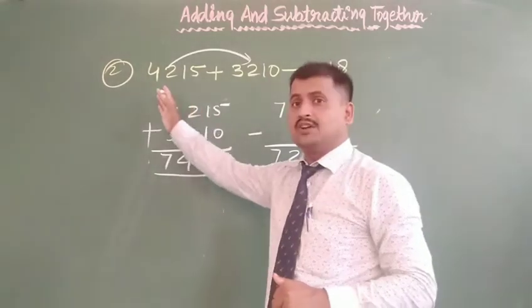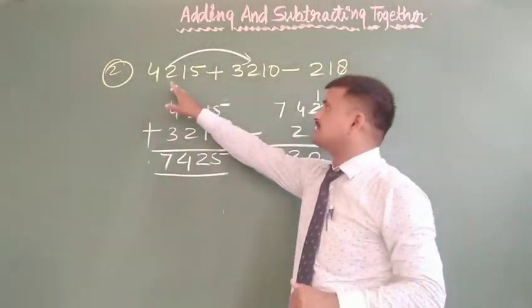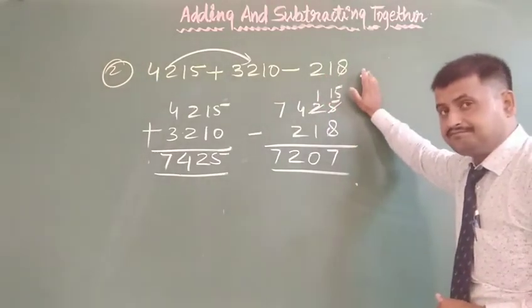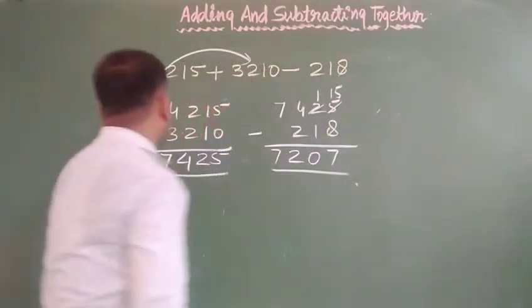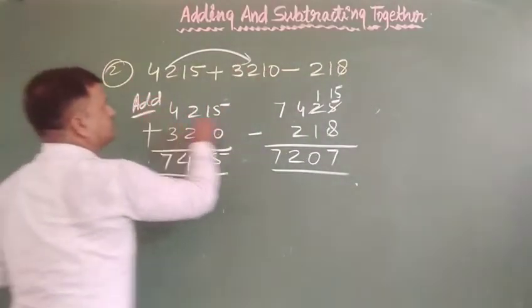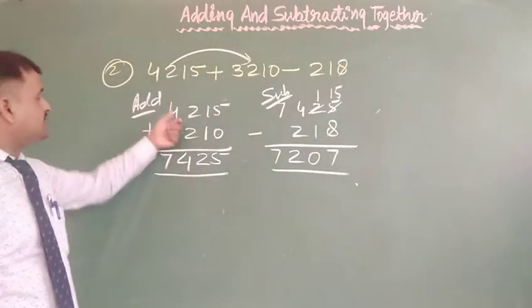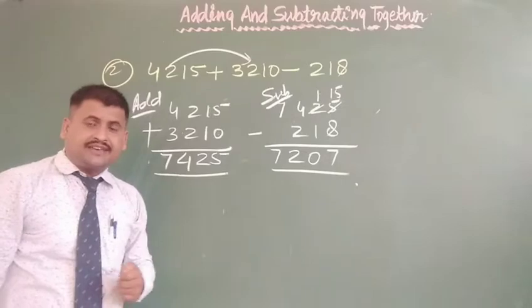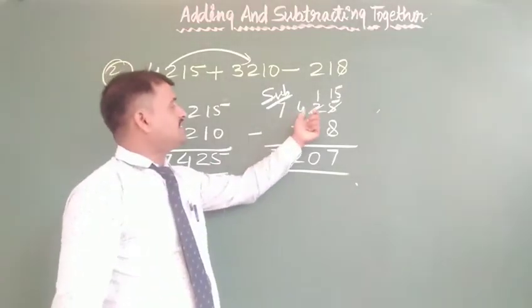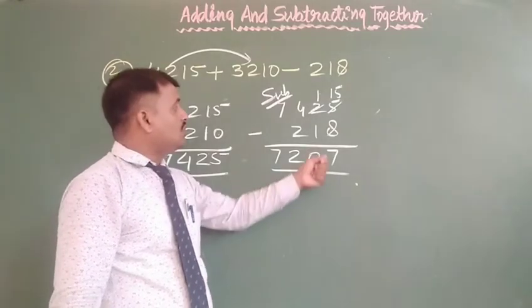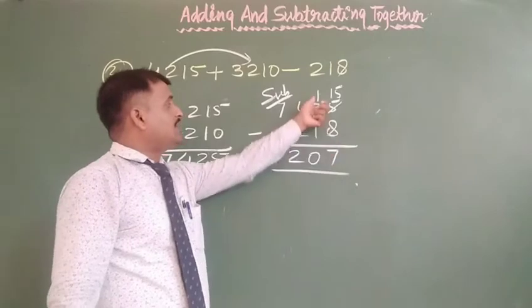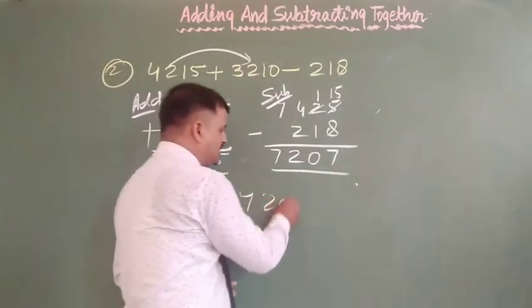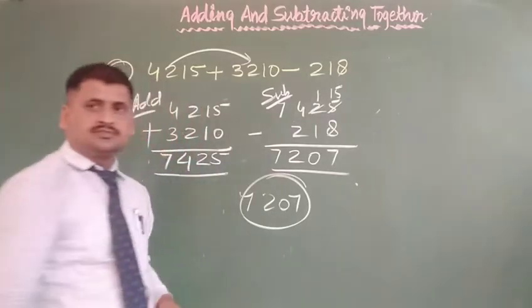We will repeat question number two one more time. Your question number second: 4,215 and plus 3,210 minus 218. First work is addition, and second work is subtraction. Addition of 4,215 plus 3,210 gives us 7,425. And second step: 7,425 minus 218. So 15 minus 8 we get 7, 1 minus 1 we get 0, 4 minus 2 we get 2, and 7 bring down. Your answer is 7,207. I hope that is clear to everyone.